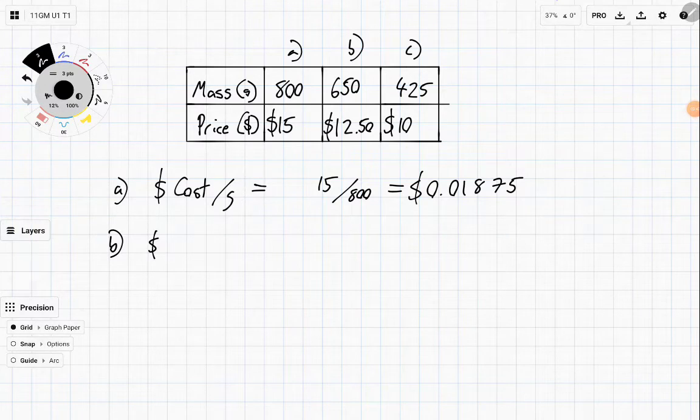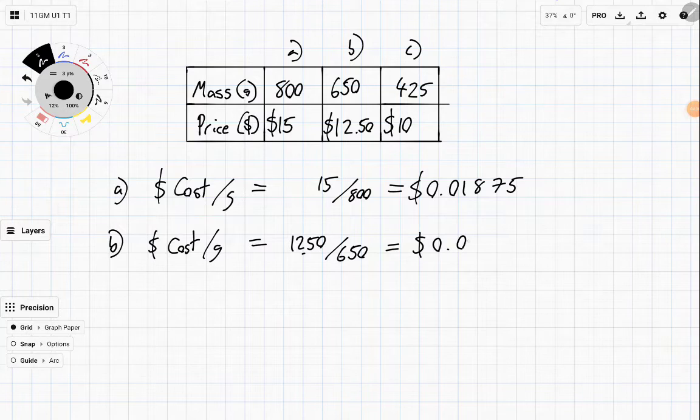So the second one, the cost per gram, well, we take the cost $12.50 and we divide it by how many grams it is, 650. And we get quite a long decimal place. And in this case, we get 0.01923.